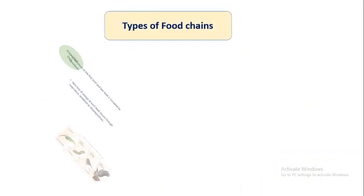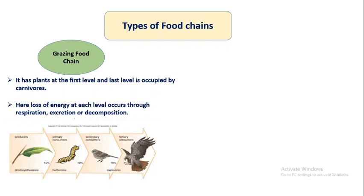Types of food chains: the grazing food chain has plants at the first level and carnivores at the last level. Loss of energy at each level occurs through respiration, excretion, or decomposition. The producers do photosynthesis and transfer 10% of energy to the caterpillar — the herbivore and primary consumer — which transfers 10% to the sparrow, the secondary consumer. When the sparrow is eaten by the hawk, it gets 10% of energy. In this grazing food chain, plants are grazed by caterpillars and other organisms, and energy is transformed through this process.